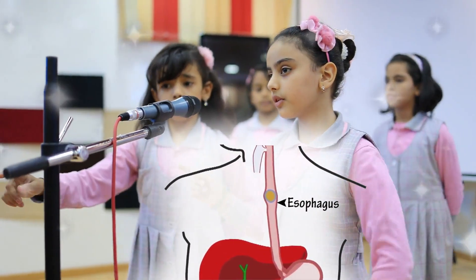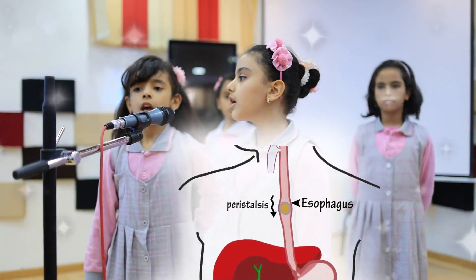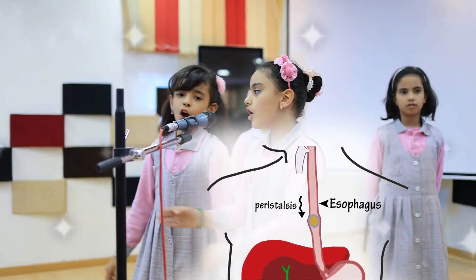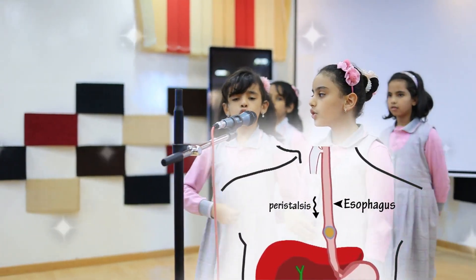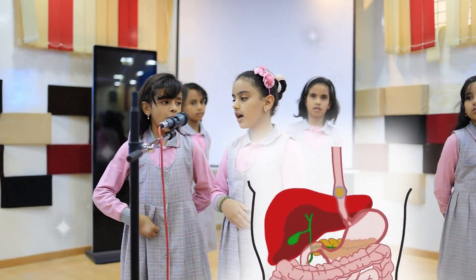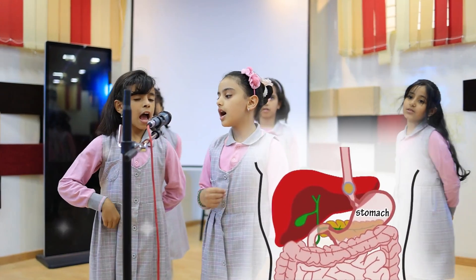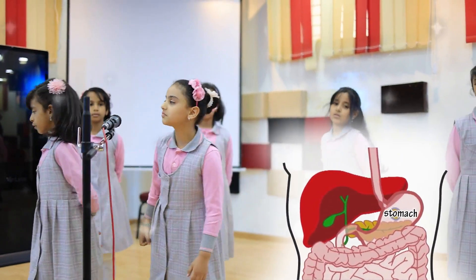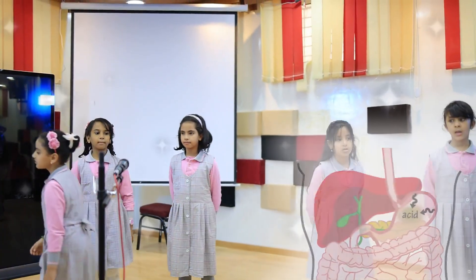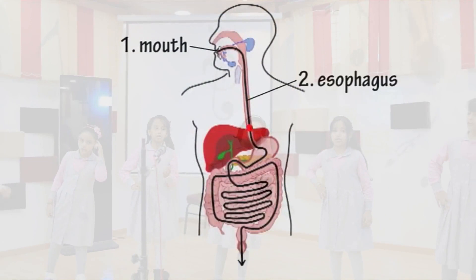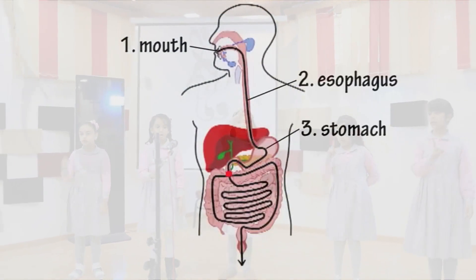The food becomes a bolus and is swallowed down the esophagus via peristalsis, making its way to the stomach where it encounters strong acid.